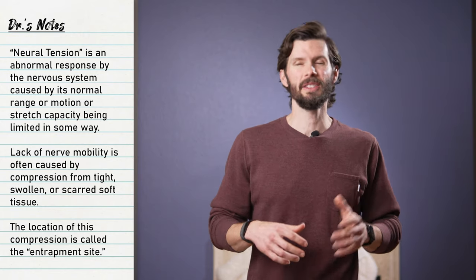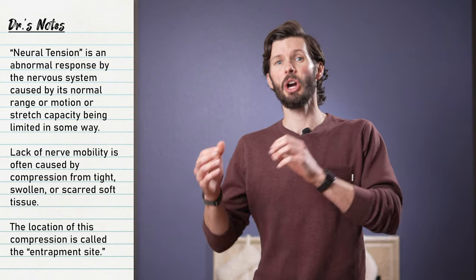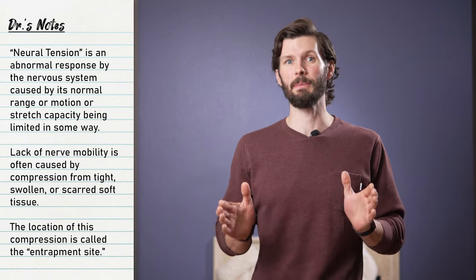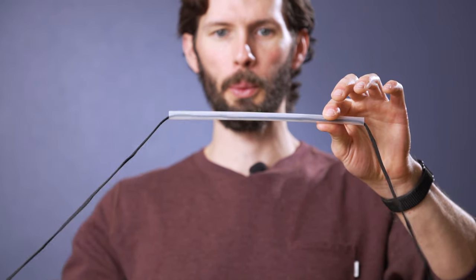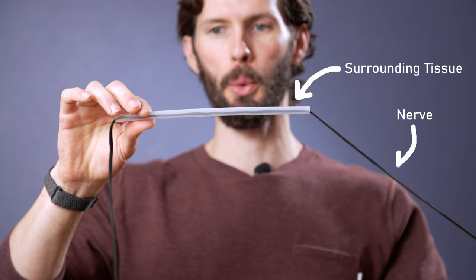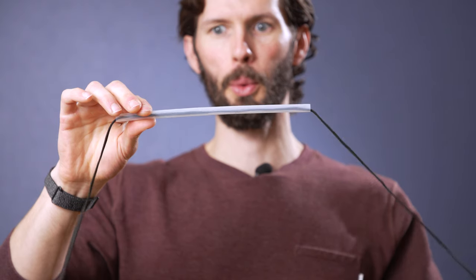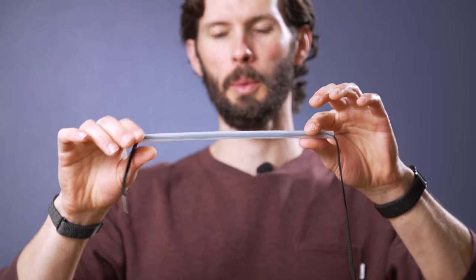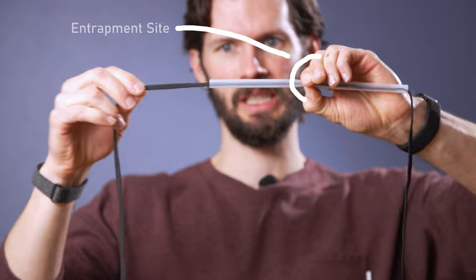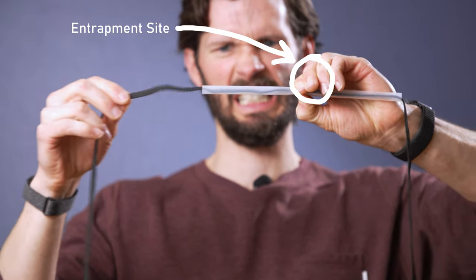Just to clarify, nerve entrapment can cause neural tension, but neural tension and nerve entrapment are not exactly the same thing. To help picture this, think of a string threaded through a straw. The string is your nerve, and the straw is the surrounding tissue. If you pull either end of the nerve, it glides smoothly through the tissue. But if you pinch the tissue and pull the nerve again, the nerve becomes entrapped and can no longer move smoothly. The resulting pressure and tension on the nerve produces symptoms.